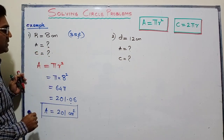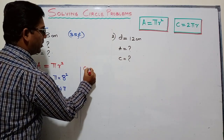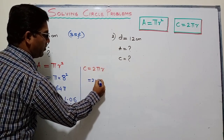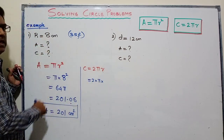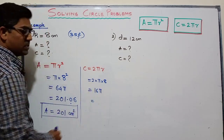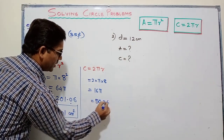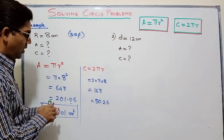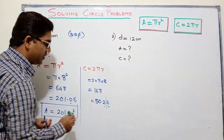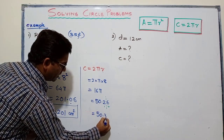Now we find the circumference. The formula for circumference is 2πr. Write the formula: 2πr. The radius is 8, so substitute: 2 × π × 8 = 16π. Put this value in the calculator and you get 50.26. We need to round to three significant figures, so we want only the first three digits. The next digit is 6 — since it is 5 or above, we increase the previous digit by 1. So the final answer is 50.3 cm.